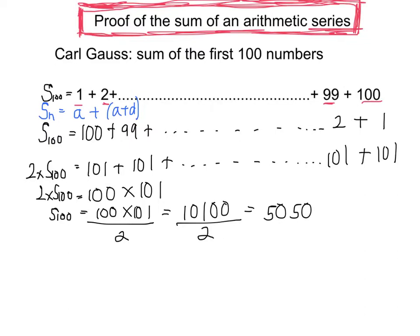My last term at the end is my nth term, which is a plus n minus 1 lots of the difference. And therefore, the penultimate term is going to be a plus n minus 2 lots of the differences. And then I've got all the other terms in between, and I'm going to add those up as well.